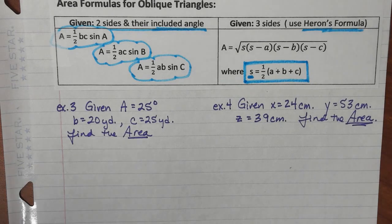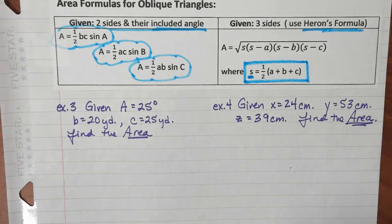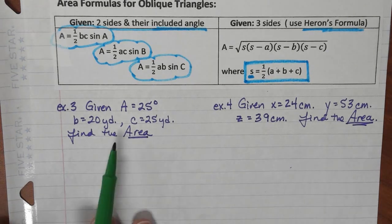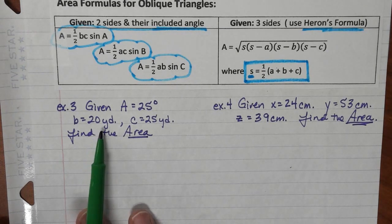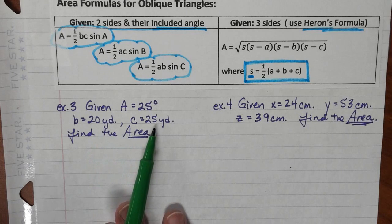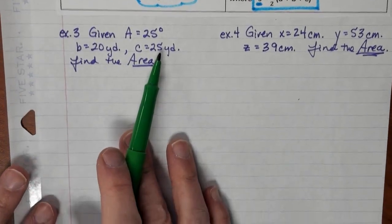Now we're going to do a couple examples. First one: if you are given an angle A that's 25 degrees, you're given side B of 20 yards and C of 25 yards, let's try to get a visual of this.